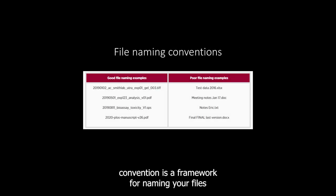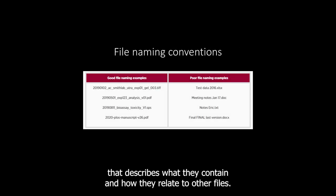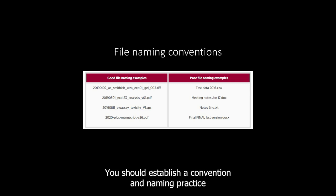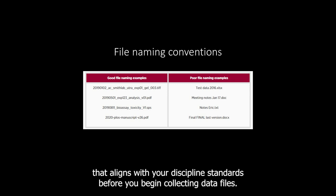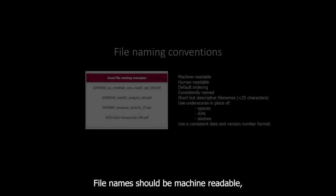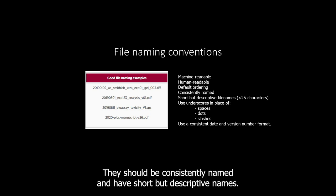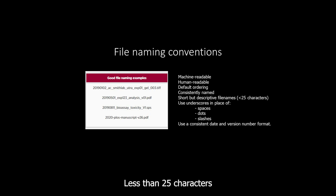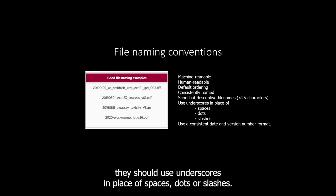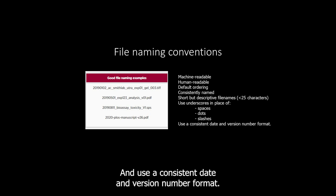A file naming convention is a framework for naming your files that describes what they contain and how they relate to other files. You should establish a convention and naming practice that aligns with your discipline standards before you begin collecting data files. File names should be machine readable, human readable, and work well with default ordering. They should be consistently named with short but descriptive file names of less than 25 characters, use underscores in place of spaces, dots, or slashes, and use a consistent date and version number format.